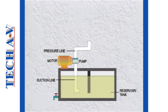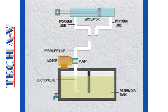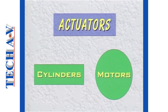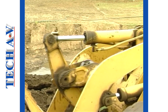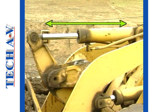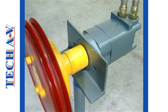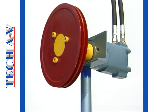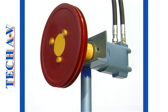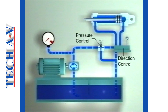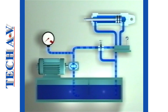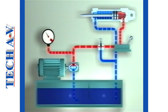The major restriction to flow in a system is an actuator, or the working device. Actuators may be in the form of cylinders or hydraulic motors. Cylinders are referred to as linear actuators because their working action is in a straight line, or linear. Hydraulic motors are classified as rotary actuators because their working action is a turning, or rotary, action.